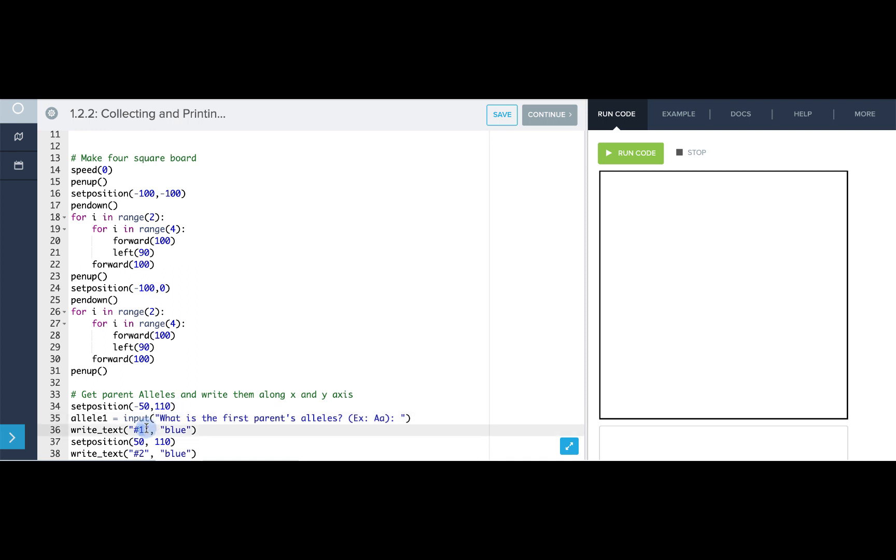If I simply write allele one in place of my number one here and I run it, I'll see that both alleles are printed in my number one position. Let's use indexing to split the values up. So instead of just allele one, I'll put a zero so I can get the indexed value of that string. Awesome.